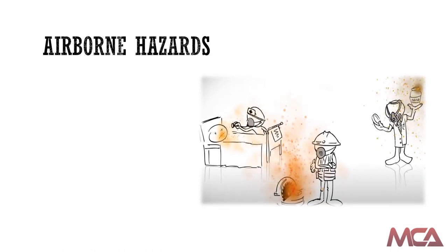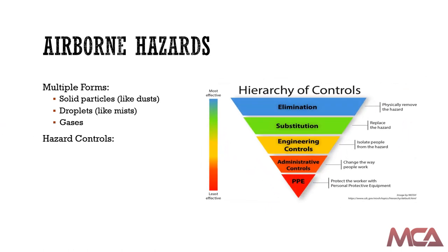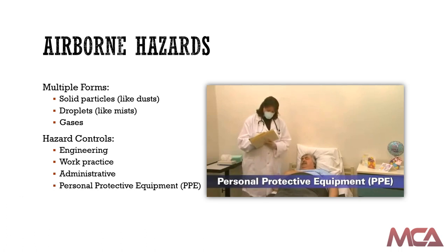Airborne hazards come in multiple forms, such as solid particles like dusts, droplets like mists, or even gases. When these hazards are present in your workplace, they are controlled in several ways, including engineering controls, work practice controls, and administrative controls. When workers cannot be adequately protected through engineering, work practice, and administrative controls, then personal protective equipment, also known as PPE, is provided.